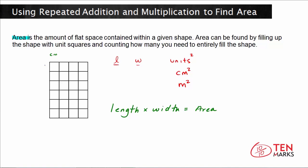In this figure, the length is the number of rows. Let's count how many rows there are: one, two, three, four, five, six. So that's our length — six centimeters. Now the width is how many squares are in each row. Counting: one, two, three, four. Four in each row. So we'd multiply six centimeters by four centimeters to get the area.